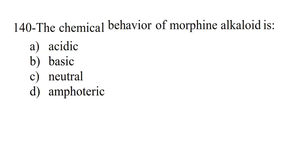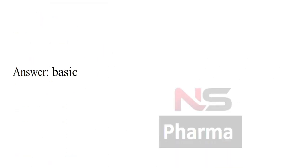Next question. The chemical behaviour of morphine alkaloid is: Option A Acidic, Option B Basic, Option C Neutral, Option D Amphoteric. Answer: Basic.